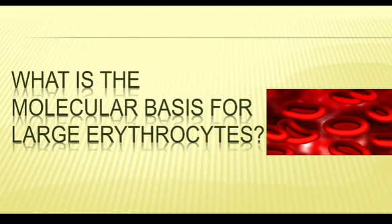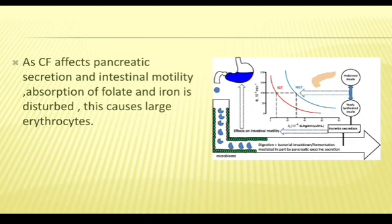What is the molecular basis of large erythrocytes? Cystic fibrosis affects pancreatic secretion and intestinal motility, which disturbs the absorption of folate and iron. When absorption of folate and iron is reduced, it causes megaloblastic anemia, which leads to large erythrocytes.